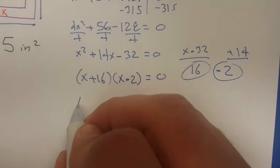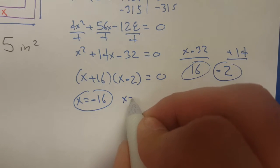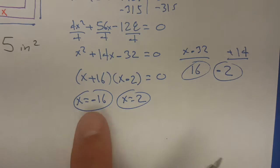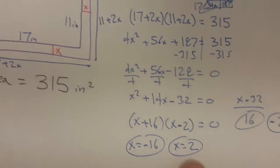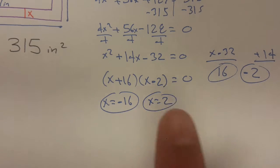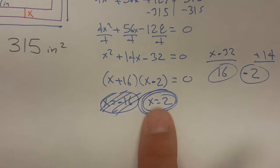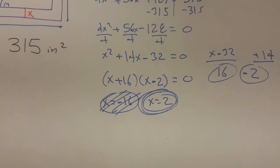Which means my solutions would be negative 16 and positive 2. So of these two possible answers, which one would make sense? You probably can't have a negative 16 inch frame, so I'm guessing this one would be the best answer. This is the real solution, this one was just theoretical.